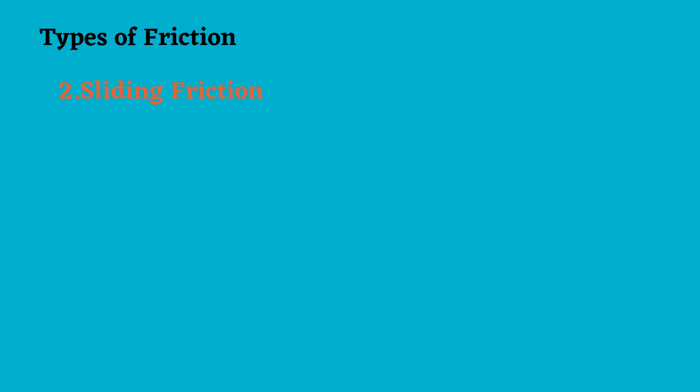The second type is what we call sliding friction — the friction acting on objects sliding over a surface.